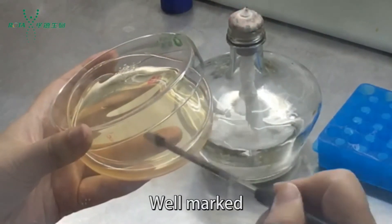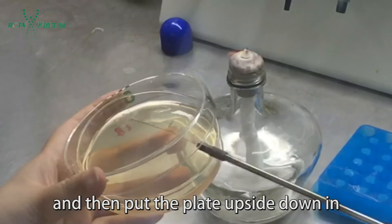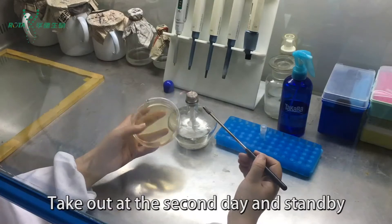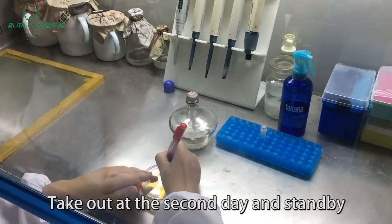Mark the plates well, then place them upside down in the constant temperature incubator at 37 degrees Celsius overnight. Remove the plates the next day and set aside.